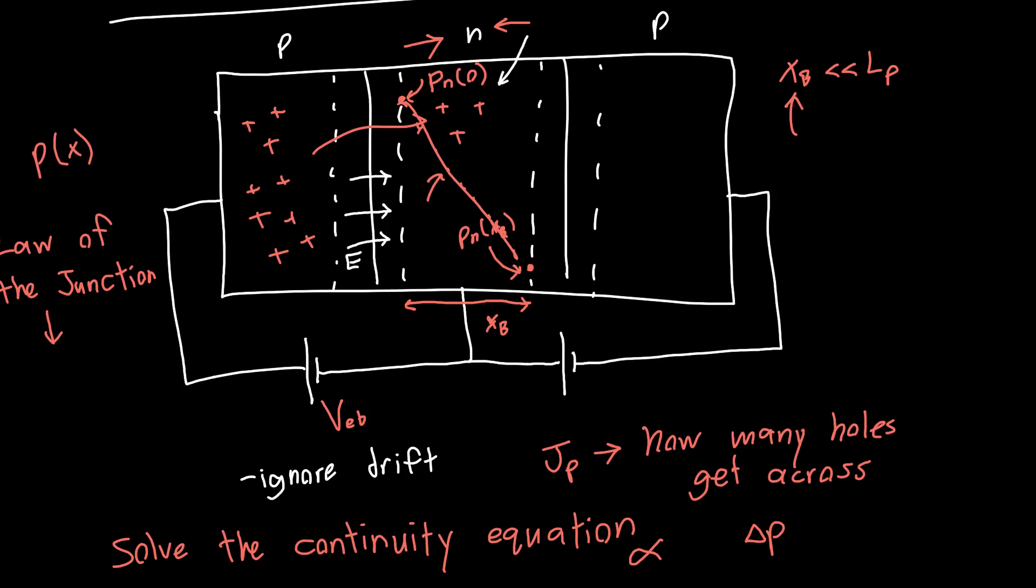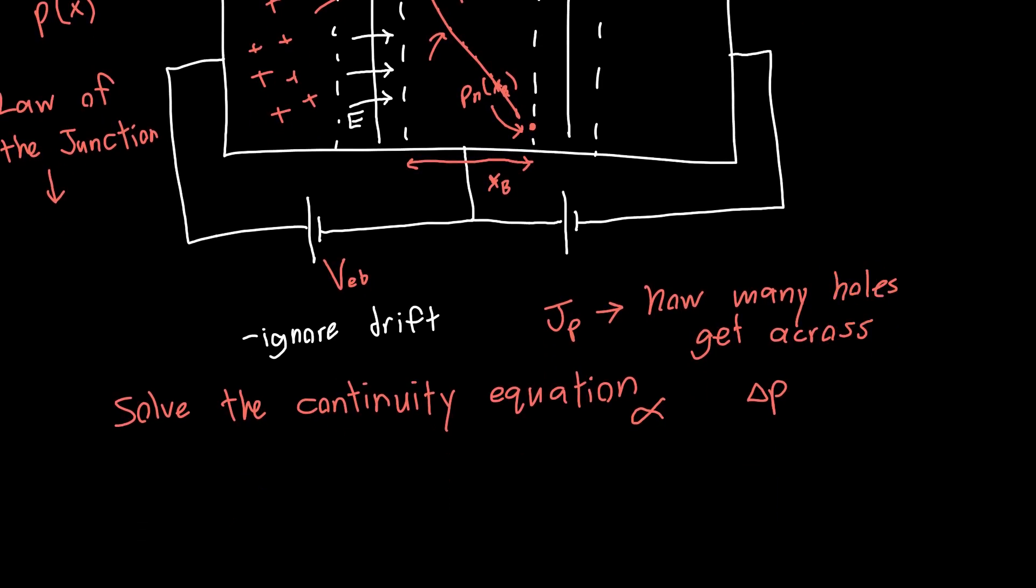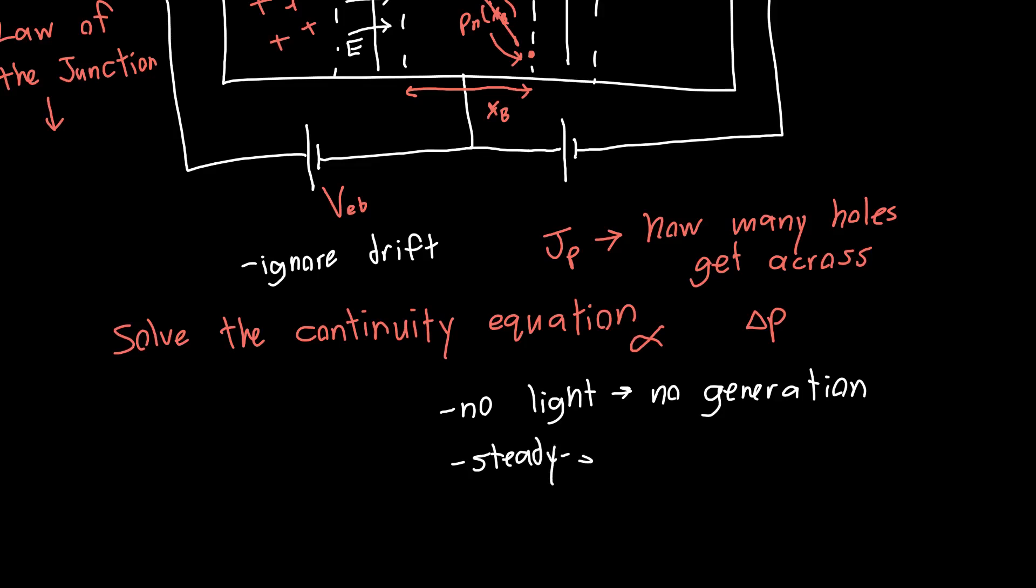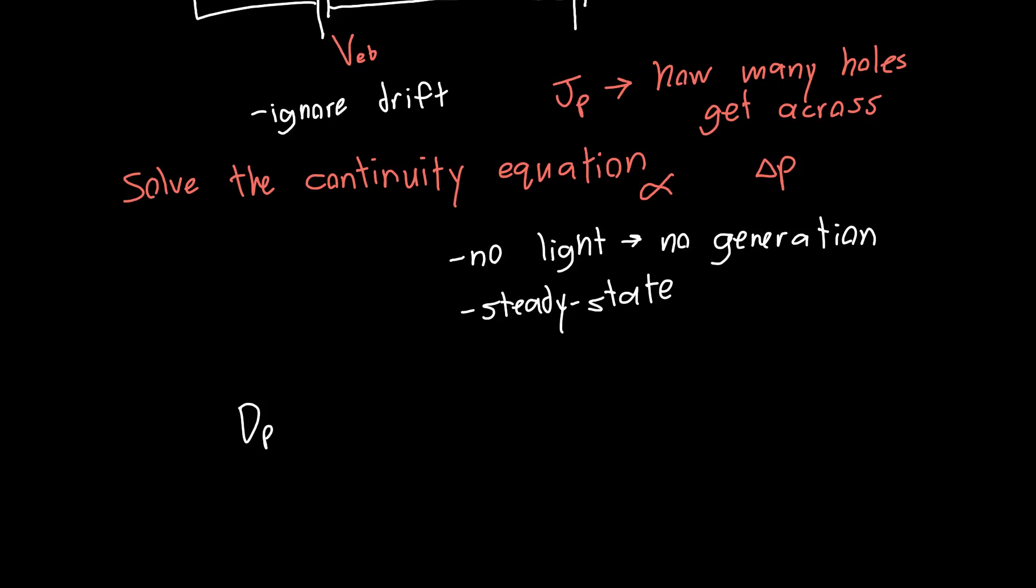And that's nice, because that simplifies the continuity equation. We're also going to assume that there's no sort of light incident on our semiconductor, or no other sources of generation. And so the only things we need to worry about are, and we're also going to assume that this is in steady state, because at this point, we're not interested in how these transistors respond in time. So if we make all these assumptions, then our continuity equation simplifies to something not disgusting, the diffusion coefficient DP times the second derivative d²ΔP/dx² minus delta P over tau P is equal to zero.